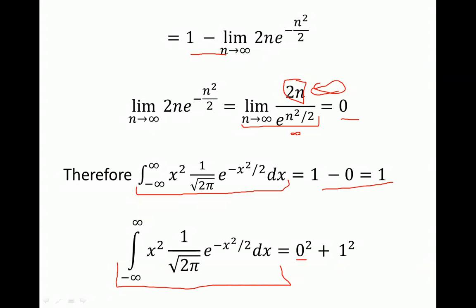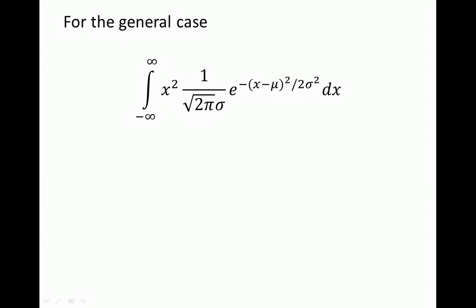We can express the result as 0 squared plus 1 squared, which is still equal to 1. Here 0 was the mean of the standard normal, so this is mu squared, and the standard deviation is 1, so this is sigma squared. We showed that the second moment for a standard normal equals mean squared plus sigma squared. But we are interested in the general case where the mean is not necessarily 0 and sigma is not necessarily 1.